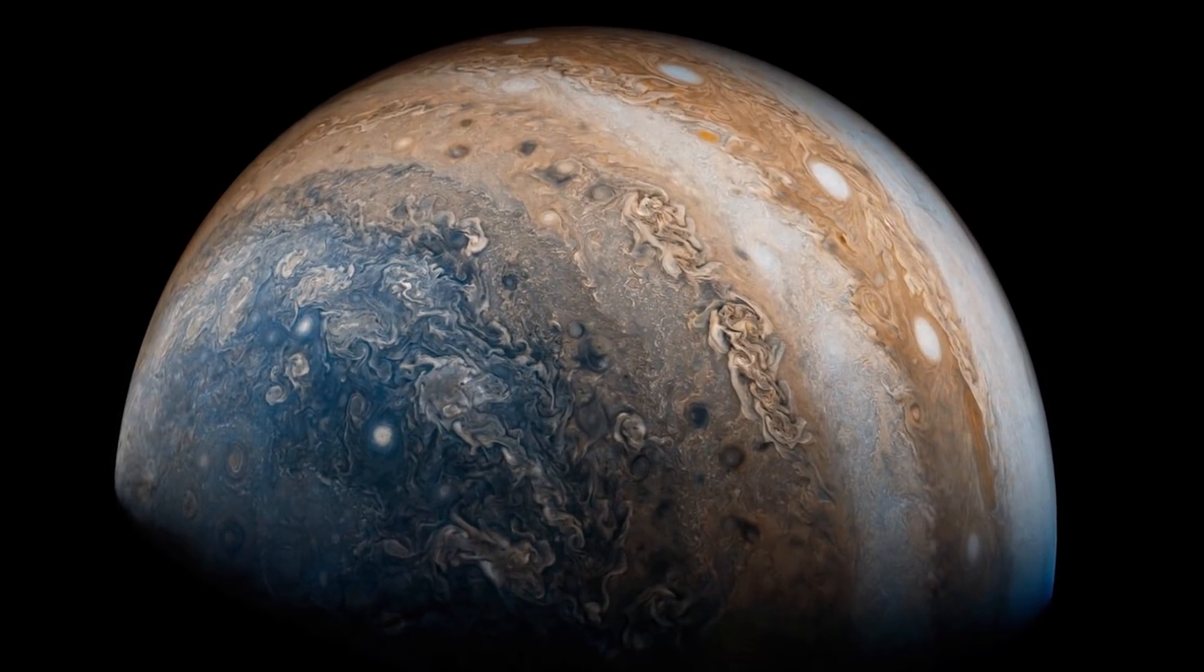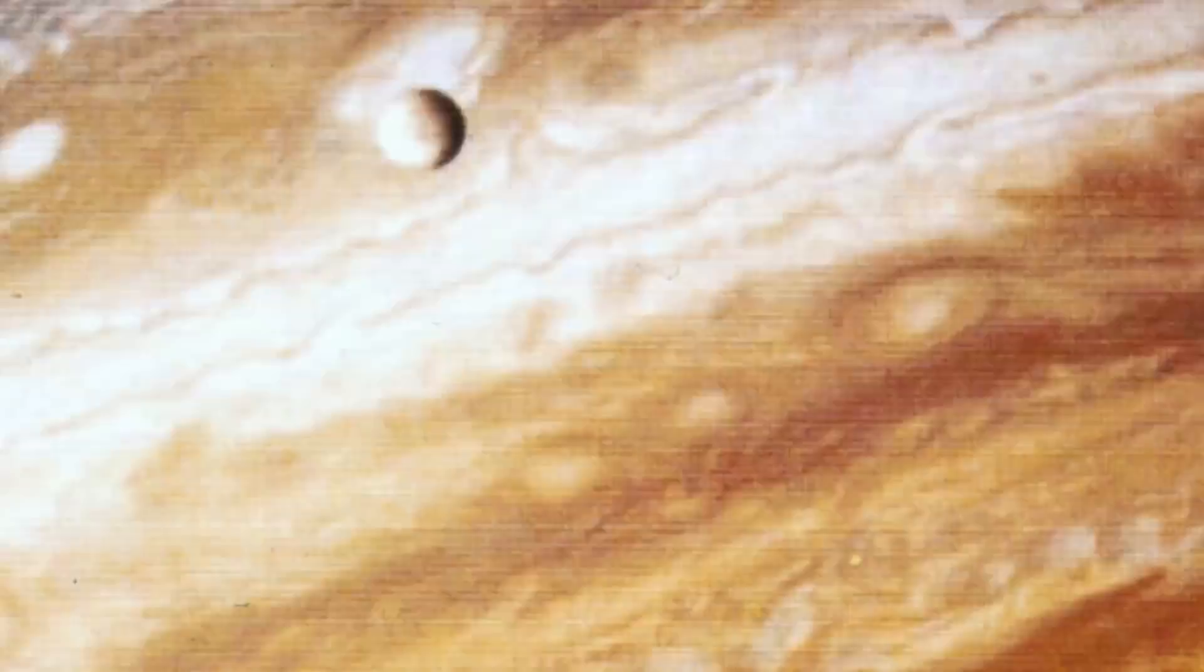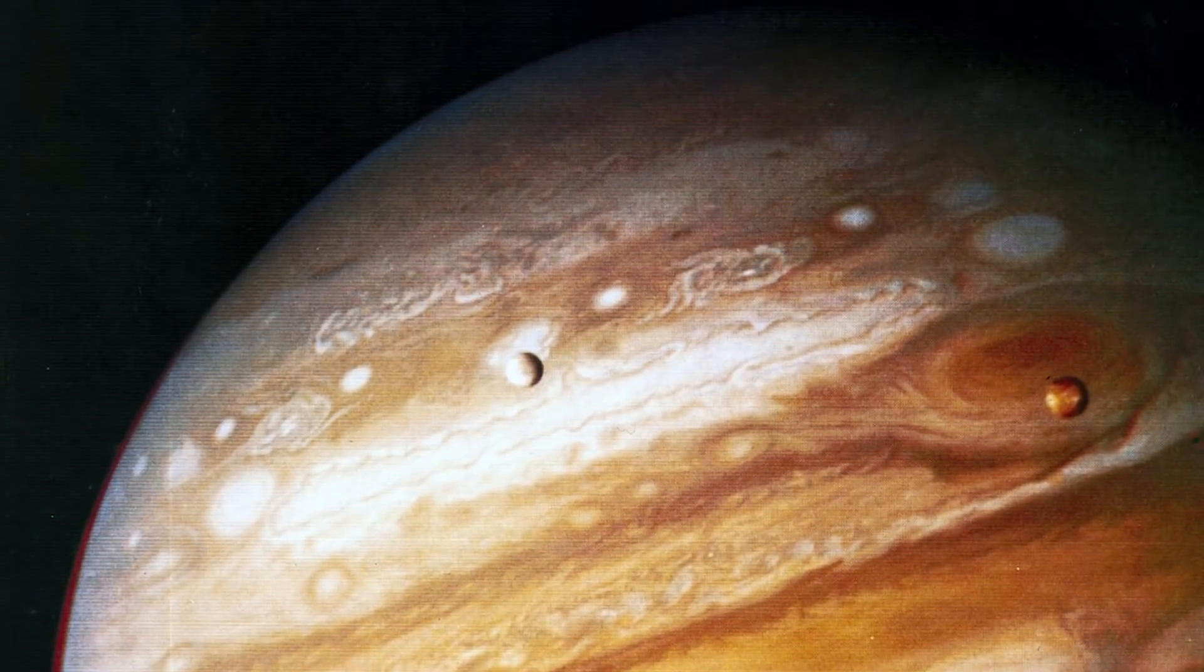One of the mysteries of Jupiter that scientists just can't wrap their heads around is why there are bright lights at the northern and southern poles. If Jupiter wasn't a gas giant, I would say those lights look like alien cities. So what causes Jupiter's poles to glow bright purple?